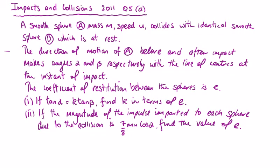Impacts and collisions 2012 question 5 part b. A smooth sphere A, mass m, speed u, collides with identical smooth sphere B which is at rest. The direction of motion of A before and after impacts makes angles alpha and beta respectively with the line of centers at the instant of impact. The coefficient of restitution is e. If tan alpha equals k tan beta, find k in terms of e.